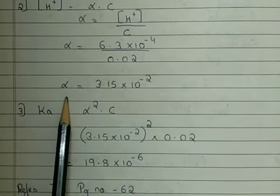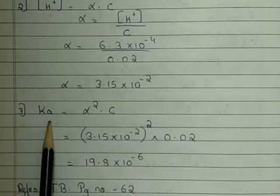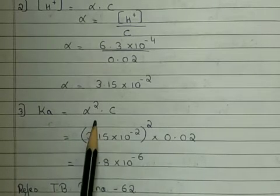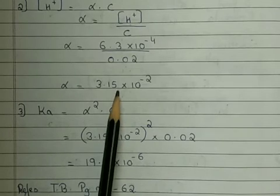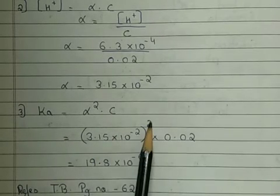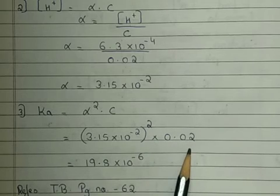After determining the value of alpha, the main question is to find out acid dissociation constant, Ka, which is alpha square into C. So alpha value 3.15 into 10 ratio to the power minus 2, the whole square into 0.02, that is nothing but our concentration value.